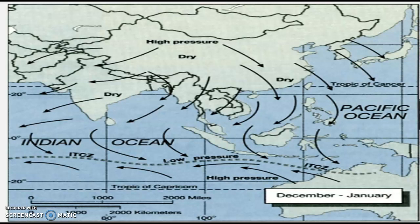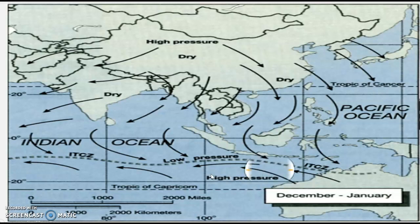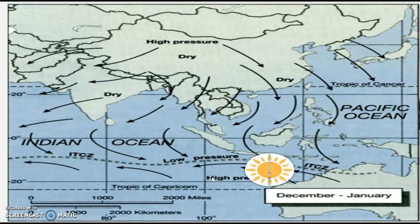Since the sun is over the southern hemisphere in December to January, the ITCZ forms over the southern hemisphere. The ITCZ always follows the sun. So when the sun is over the southern hemisphere, the ITCZ forms there. And when the sun moves north, the ITCZ forms over the northern hemisphere.